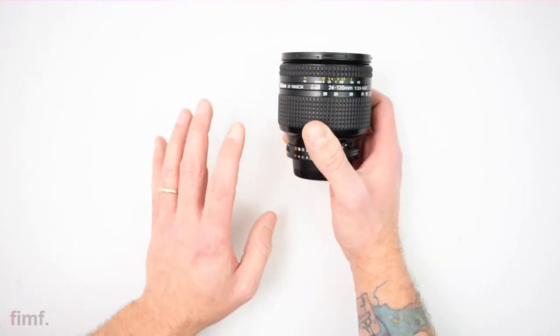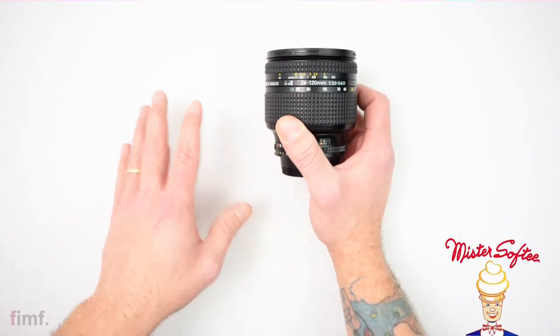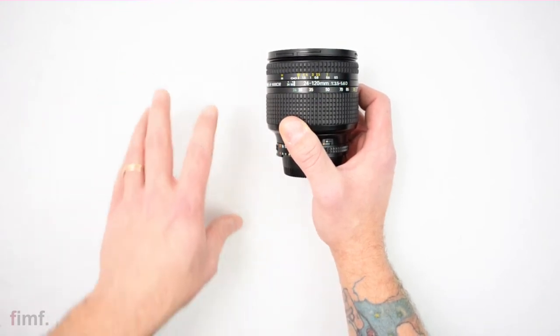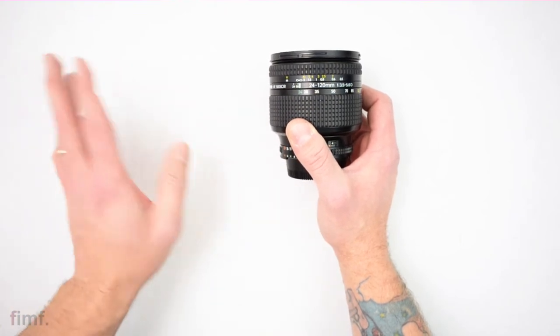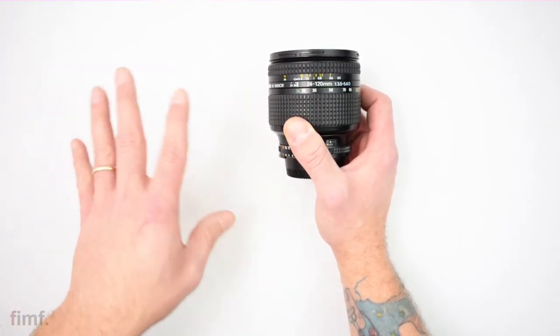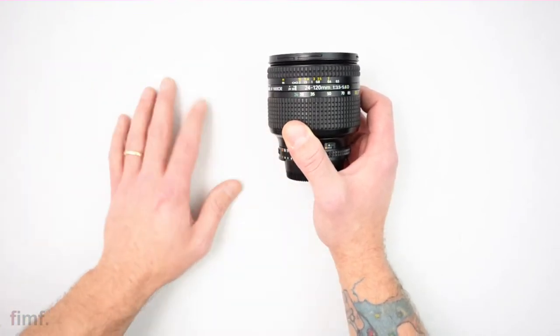Now I've nicknamed this thing Mr. Softy because that's pretty much what you get. There is sharpness in the center, but as you move out to the sides not so much. And that's actually not the only issue that this lens has.